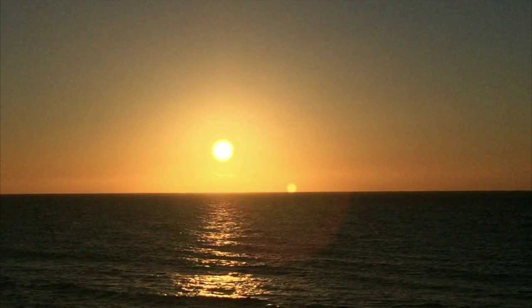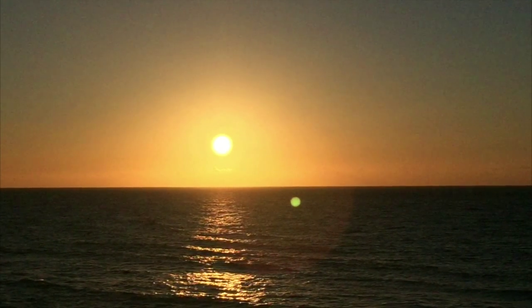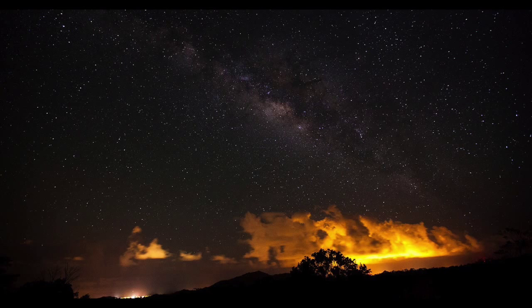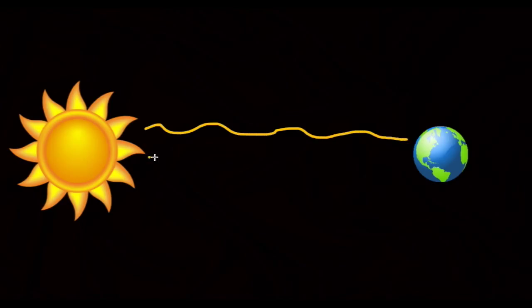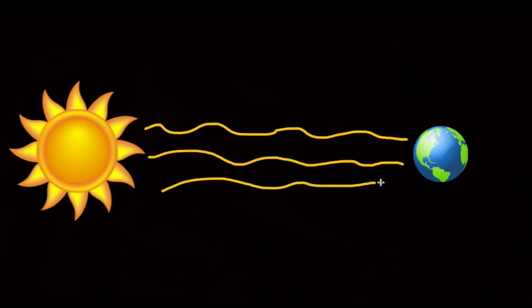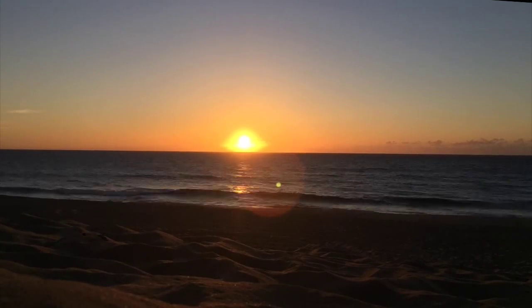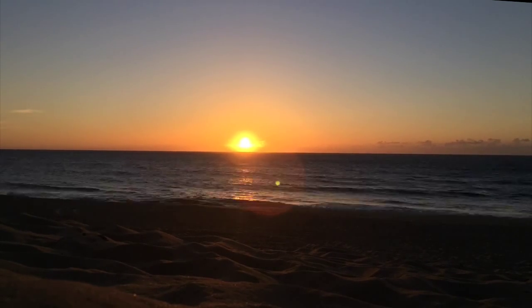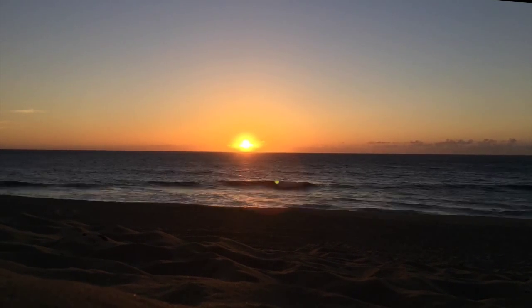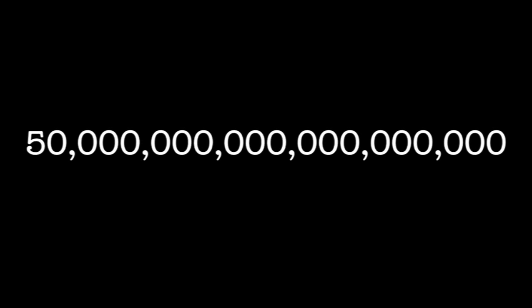Photons are the force-carrying particles for the electromagnetic force. They are also the transmitters of light. Any object that emits light emits photons, from the most distant stars to the computer that you are watching this on. When the sun emits light, it emits photons, and these photons travel at the speed of light towards Earth. This is how we see the light from the sun. The sun actually emits around 50 quintillion photons per second — that's a 5 with 19 zeros behind it.